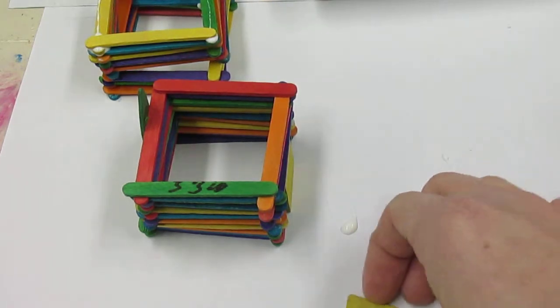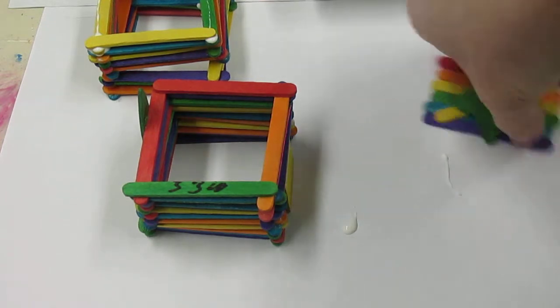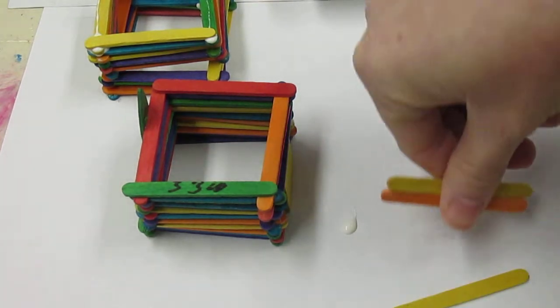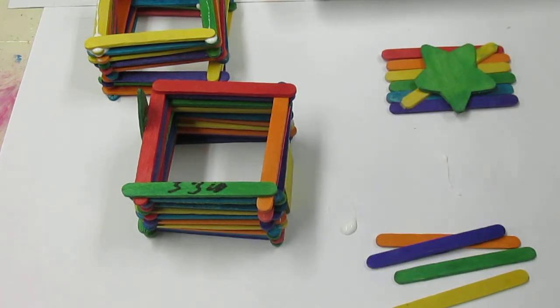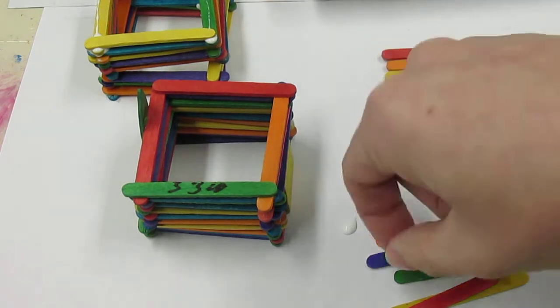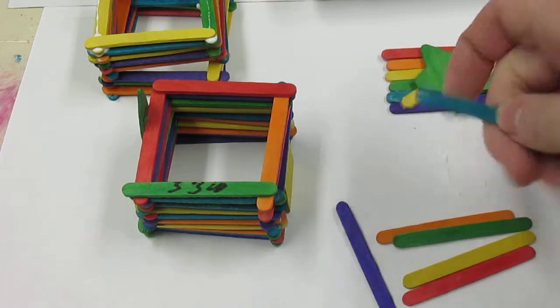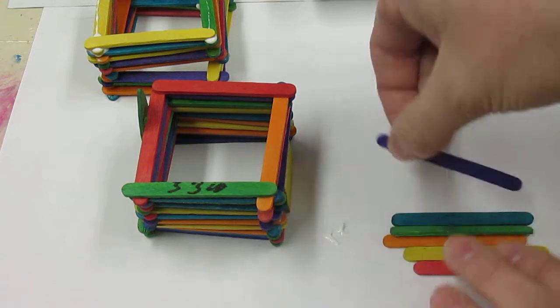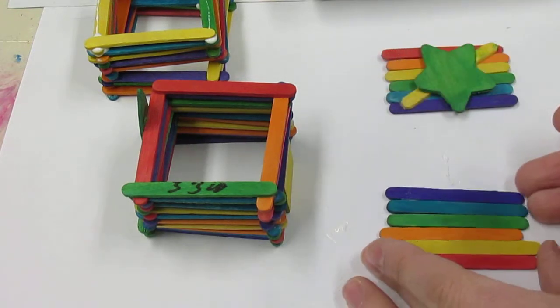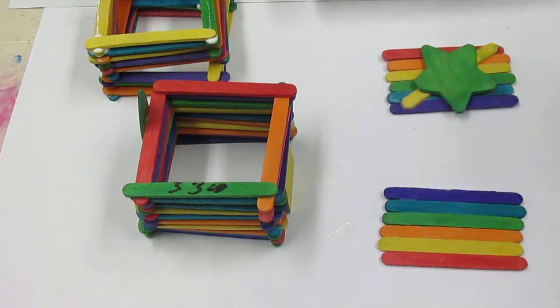For my roof, I'm going to need six sticks: one, two, three, four, five, six. These six sticks are going to be laid right next to each other. I'm going to line them up and squish them as close as I can get them.